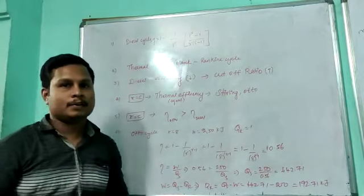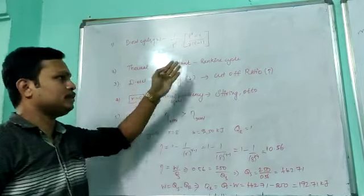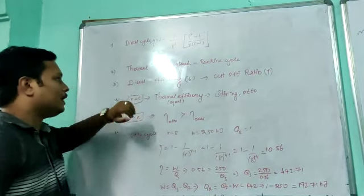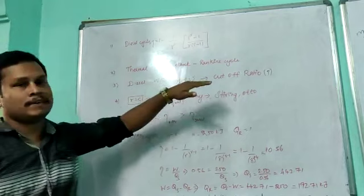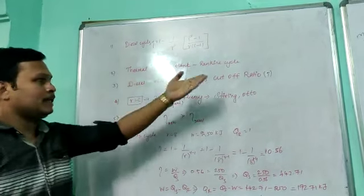That is thermal power plant. I will use this cycle. That is a ranking cycle. That is a diesel cycle efficiency. Cut-off ratio is equal to cut-off ratio increase.